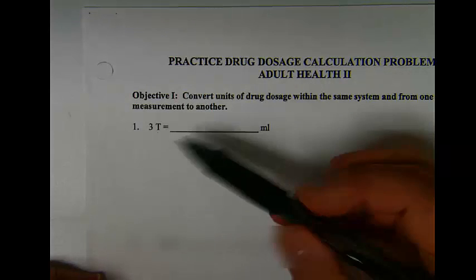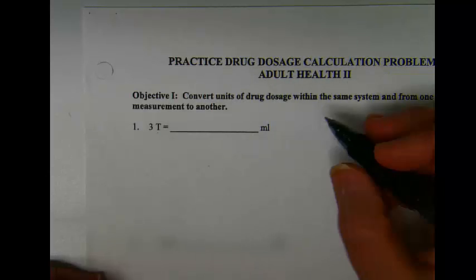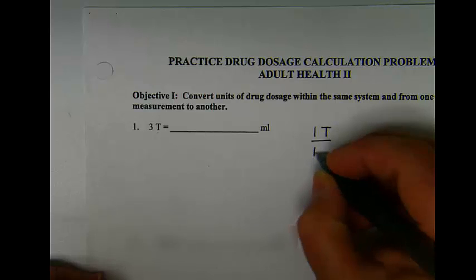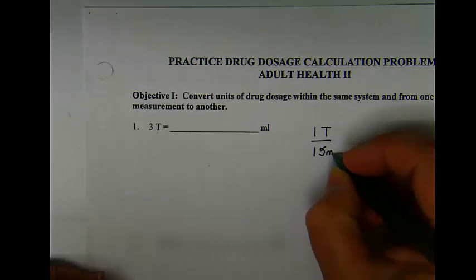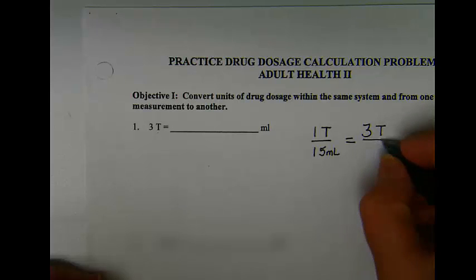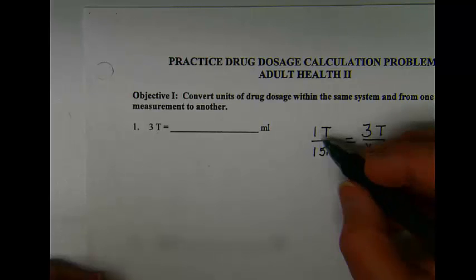In order to say how many three are, you must know the value of one. So if I know one tablespoon is the same thing as 15 milliliters, then I can easily set up my problem to say how many milliliters are three, if I know the value of one.